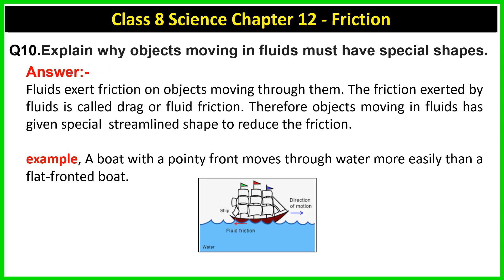Question 10: Explain why objects moving in fluid must have special shapes. When an object moves in a fluid, a force opposes its motion, known as fluid friction. The friction exerted by fluid is called drag. Therefore objects moving in fluids are given a special streamlined shape to overcome this friction. Examples of streamlined shapes include fish, boats, aeroplanes, and birds.